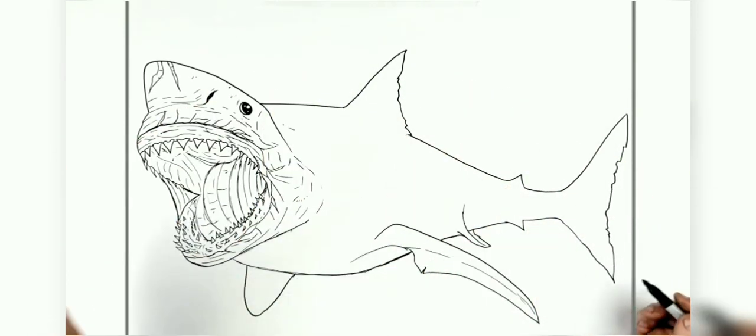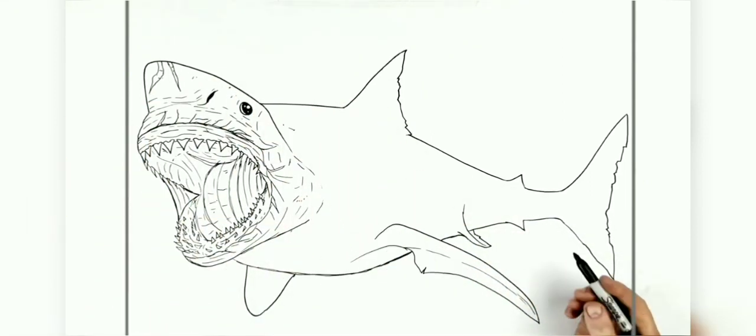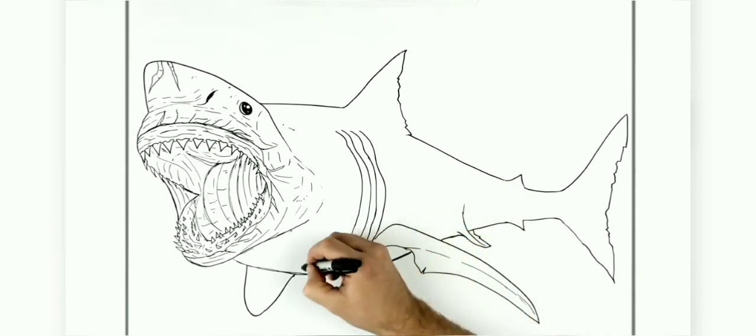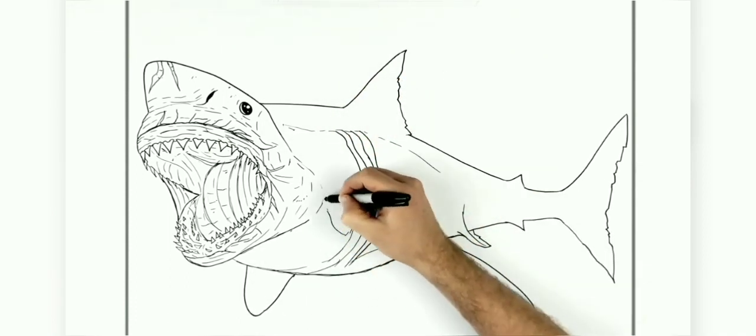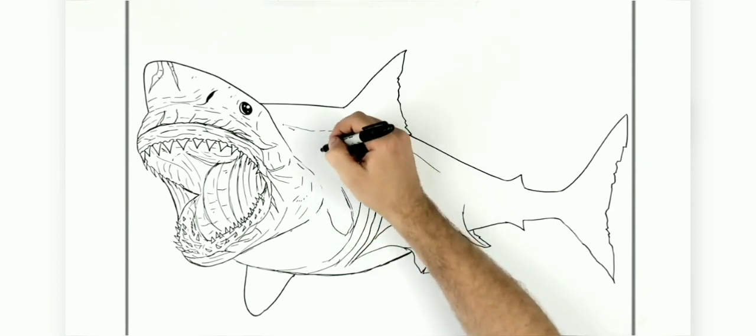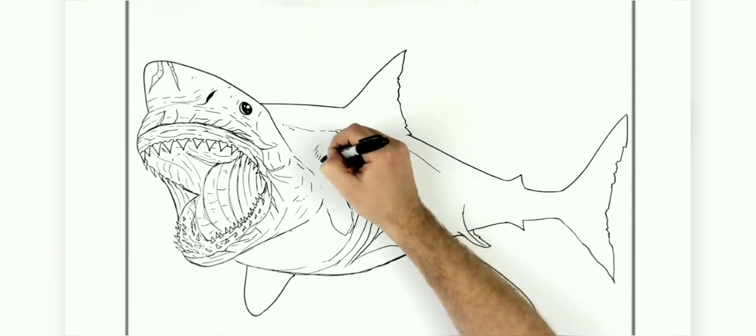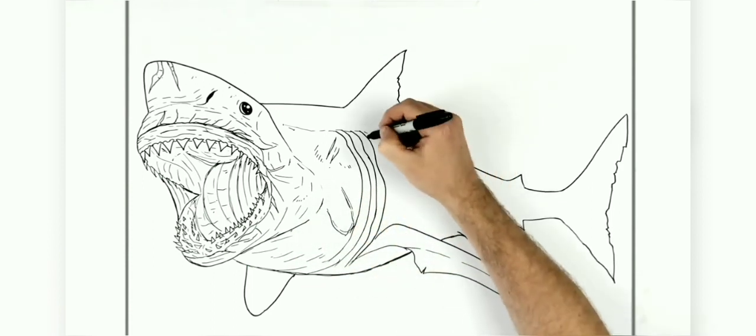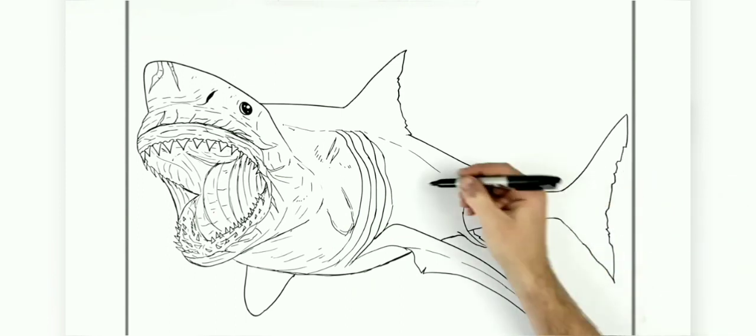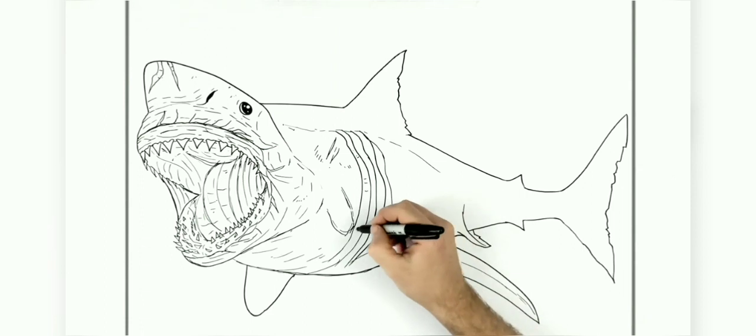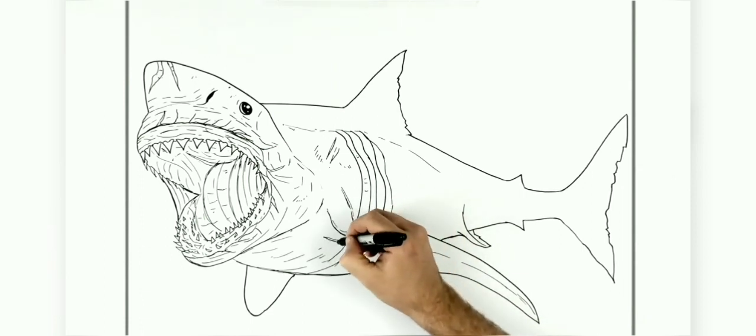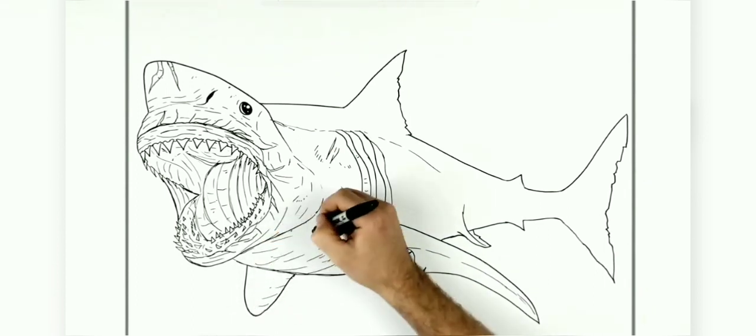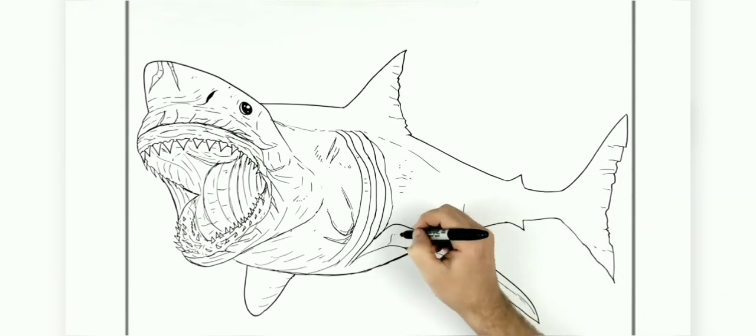So now that's basically his teeth and stuff, so we'll draw details on his body. He's got like gills all here. Lots of sort of scars and scratches. Maybe another gill. He's got like lots of cuts and stuff on him.